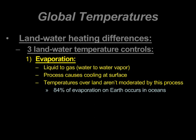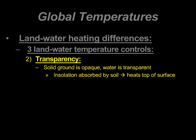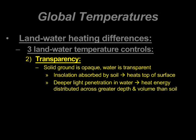Second is transparency — the simple idea that solid ground is opaque, whereas water is transparent or clear. Only the extreme top layer of a land surface absorbs incoming solar radiation. Water, because of its transparency, allows solar radiation to penetrate deeper, so the same amount of insolation gets spread over a greater area, whereas with solid ground it's concentrated only at the very top layer.